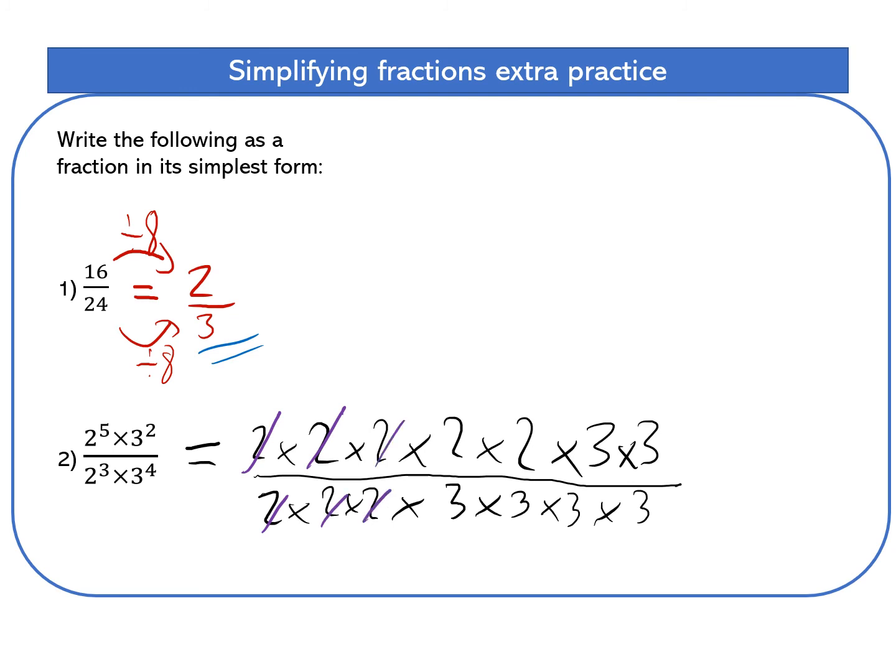I can't do any more. I've got some twos left from the numerator, but not for the denominator. Let's do the threes. And that leaves me with two times two divided by three times three, which is four over nine.